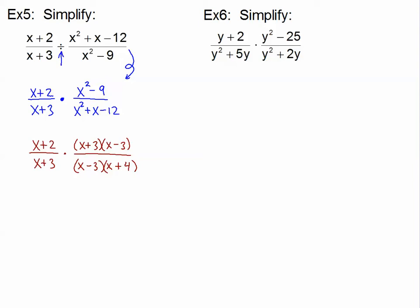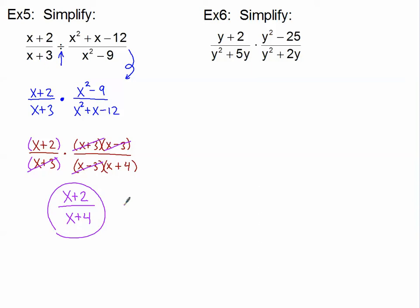We've factored everything. I have three factors up top and three in the denominator, all being multiplied together. Now cancel common factors: x plus 2 has no match in the denominator — it stays. x plus 3 in the numerator cancels with x plus 3 in the denominator. x minus 3 cancels with x minus 3. The only factor remaining in the numerator is x plus 2, and x plus 4 remains in the denominator. That's our answer: x plus 2 over x plus 4.